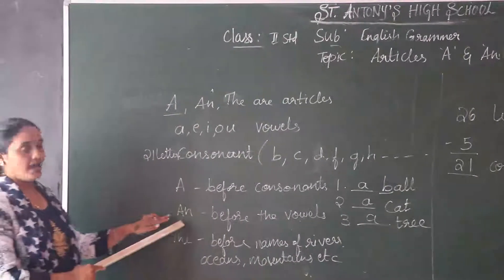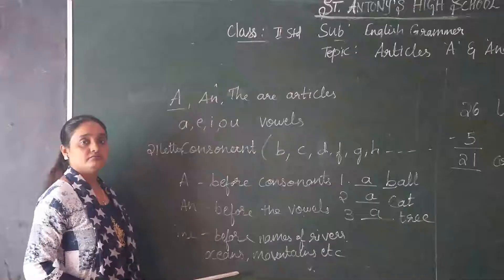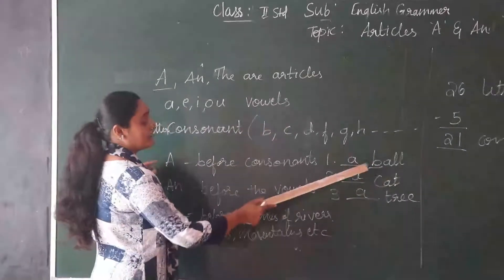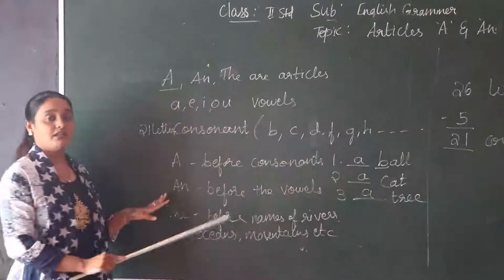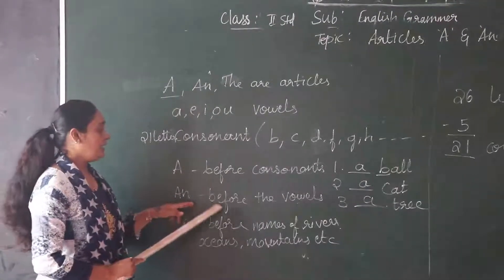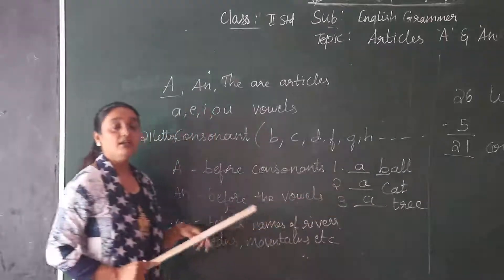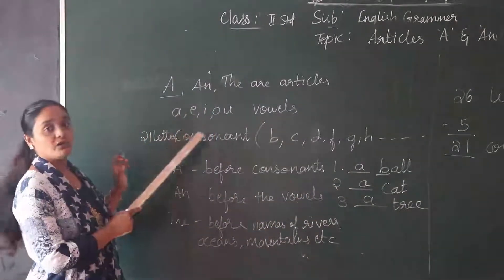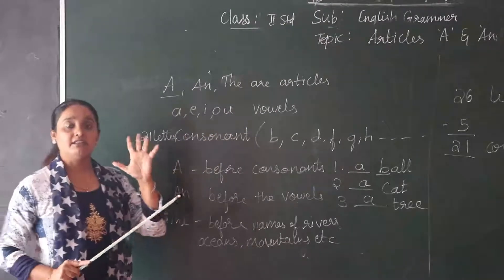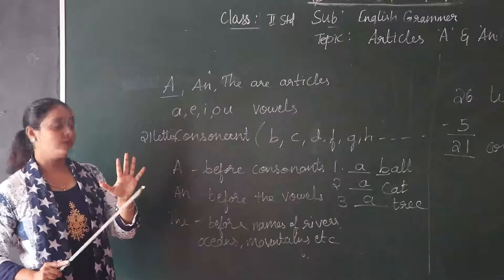Next we have AN. AN is also an article. Now we saw how we are using A — that is before the consonants. Next we are using AN. How we are going to use AN? AN is used before the vowels. What are the vowels? A, E, I, O, U. How many are there? There are 5 vowels.